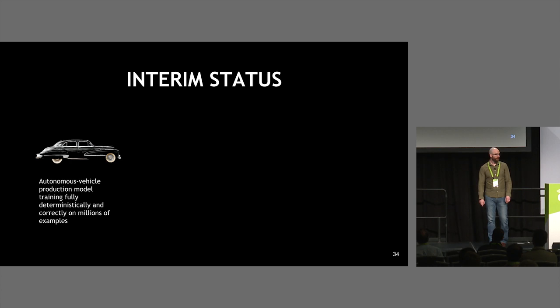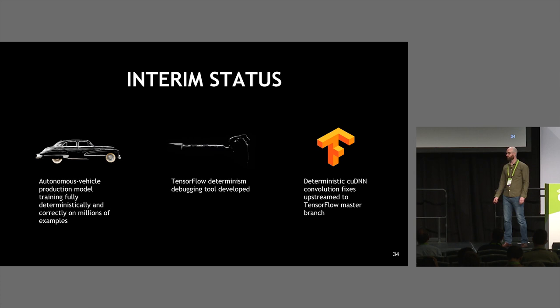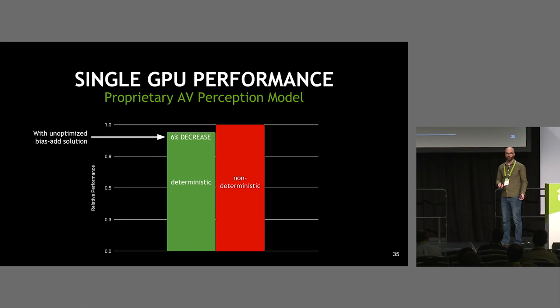At this point, I had an autonomous vehicle model training fully deterministically on millions of examples, along with the debug tool and the upstreaming of part of the solution to TensorFlow. Looking at performance, deterministic and non-deterministic are very close — only a 6% decrease for running deterministically. This is with an unoptimized bias add solution, so potentially they could be nearly equal. The story that this is an impossible problem or that you need non-determinism for performance is simply not true.